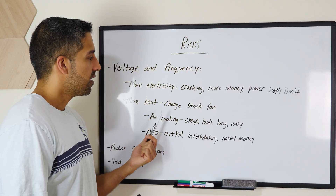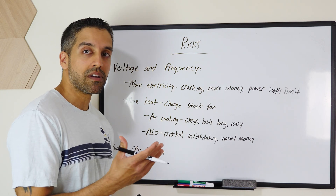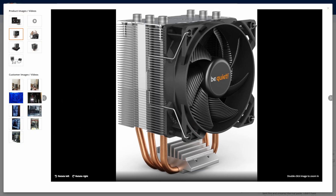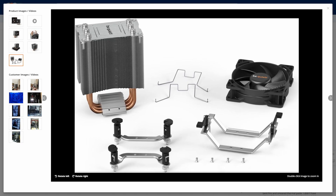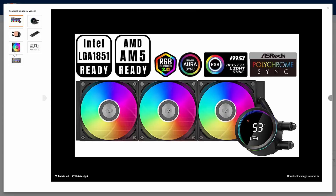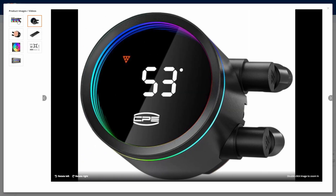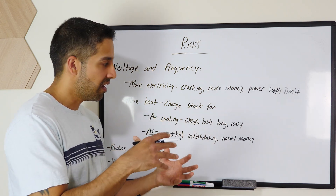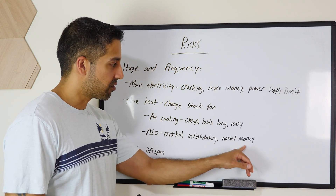Overclocking also generates more heat. The stock fan that comes with the processor might not be good enough to keep it cool. There are third-party air cooling solutions — fan-based with heat sinks — that you can buy. They're relatively cheap, last longer in the long run, and are easy to install; they look big and intimidating but are actually really easy. Another solution people experiment with is AIO liquid cooling, but this has been extremely overkill — it's usually better for graphics cards that generate much more heat than CPUs. In a lot of cases, when you buy it, you realize you don't need it; it's just wasted money.